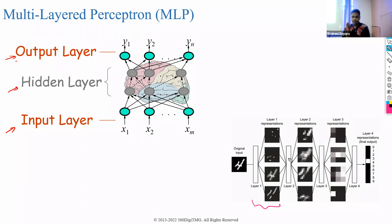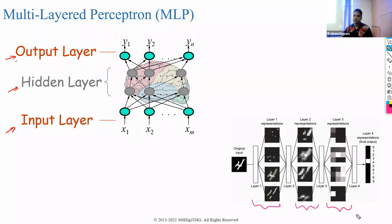The patterns captured by the hidden layers are hidden — they are a black box. Hence neural network algorithms are also called black box techniques because you have no interpretation for the weights. Finally, you have an output layer that gives you the outputs.